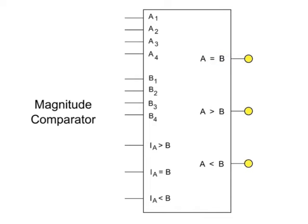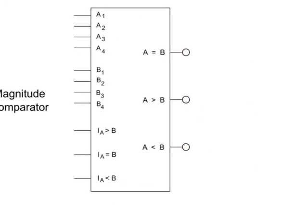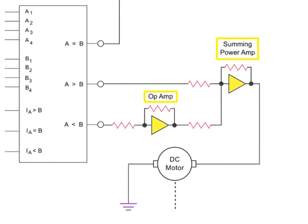The outputs of the magnitude comparator are input to the amplifier. Amplified potential is transmitted for positioning of the motor.